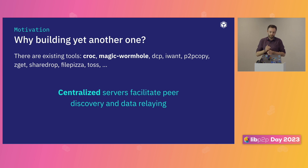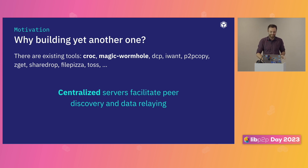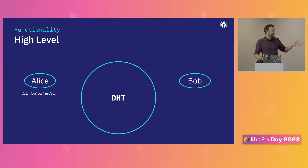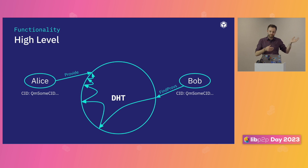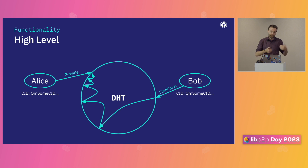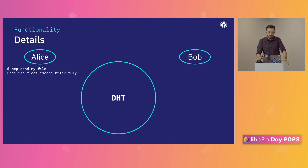My idea with this talk is to give a brief overview of how it works and then have a callout to the community. At a high level, Alice generates a CID, writes it somewhere in the DHT. The CID is transferred to Bob, and Bob does a lookup for the provider record that Alice has written to the DHT. In that provider record we have the multi-addresses Bob can use to connect to Alice. As soon as Bob finds this provider record, they can establish a direct connection.